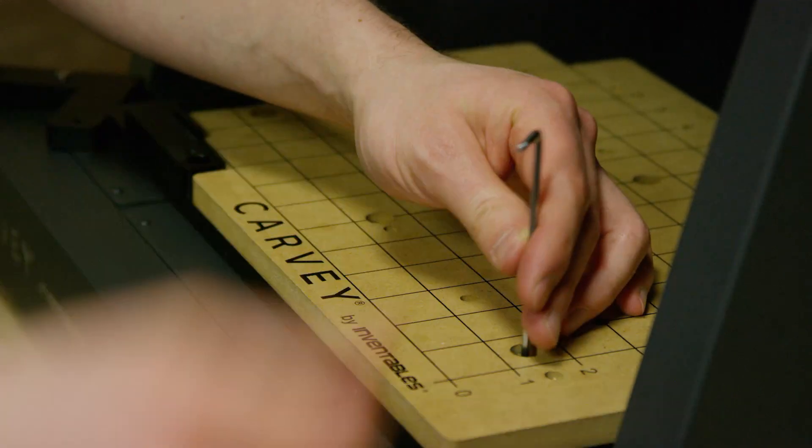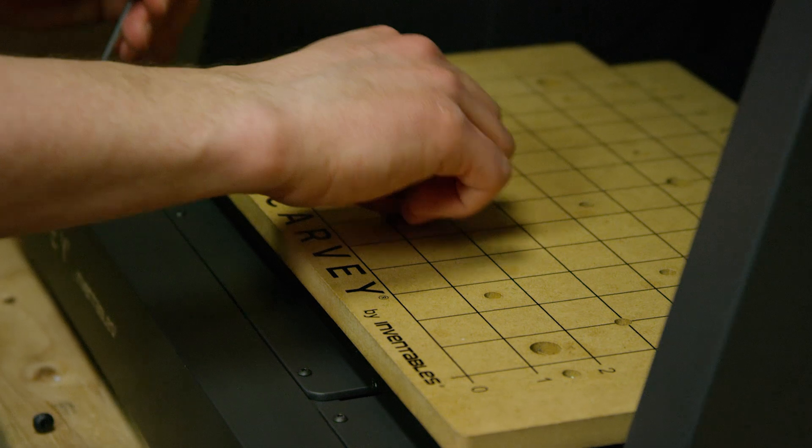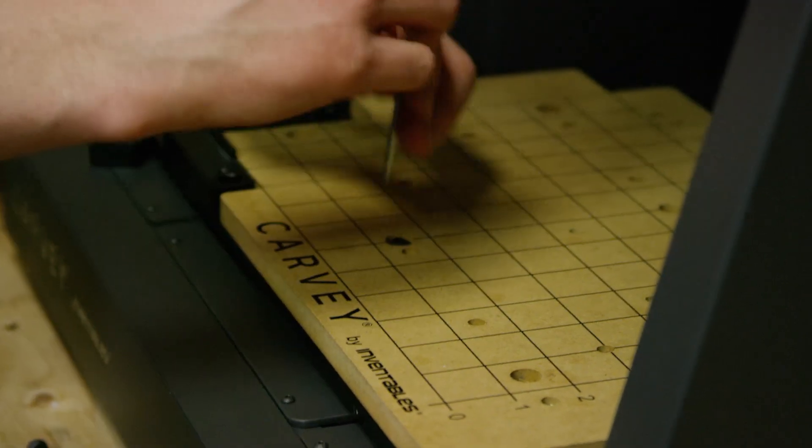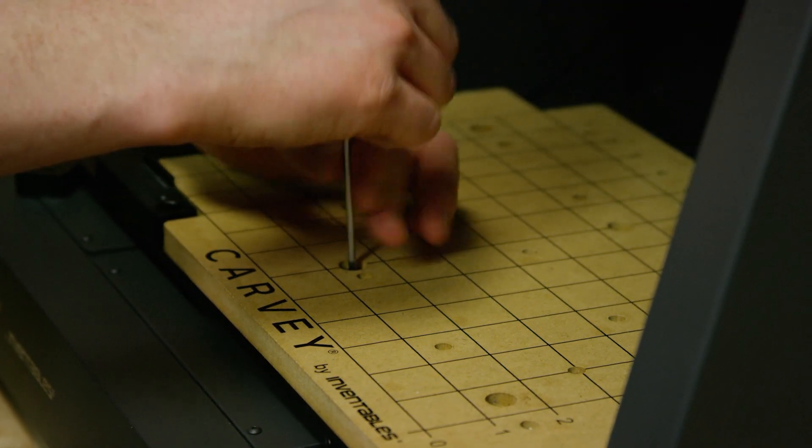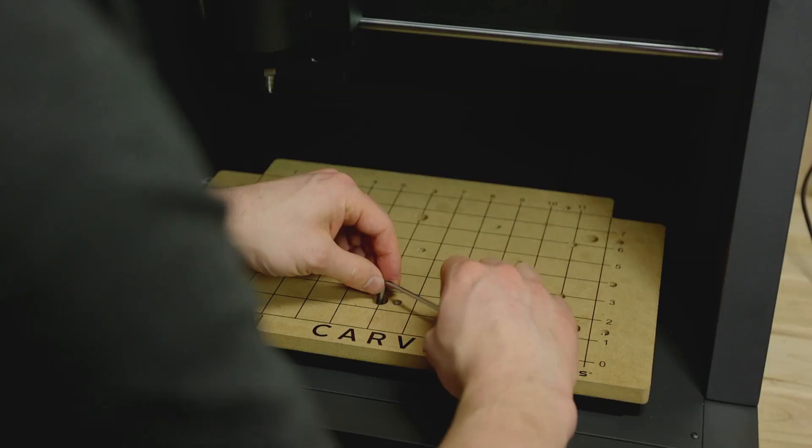We do use thread locker on these screws. It's a nice idea just to add a little bit of thread locker back on when they're going in. Get them as tight as you can so it doesn't move around.